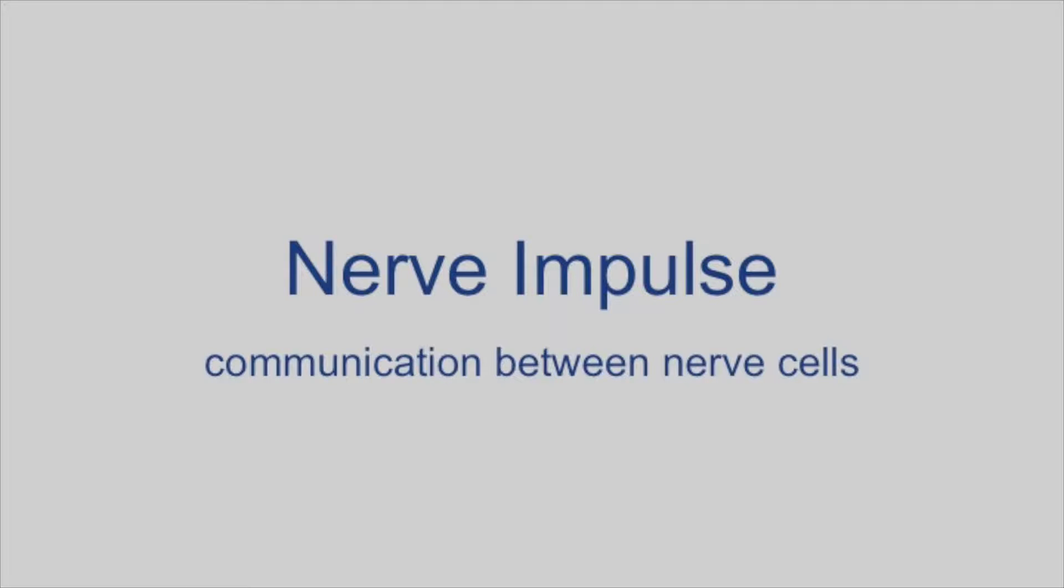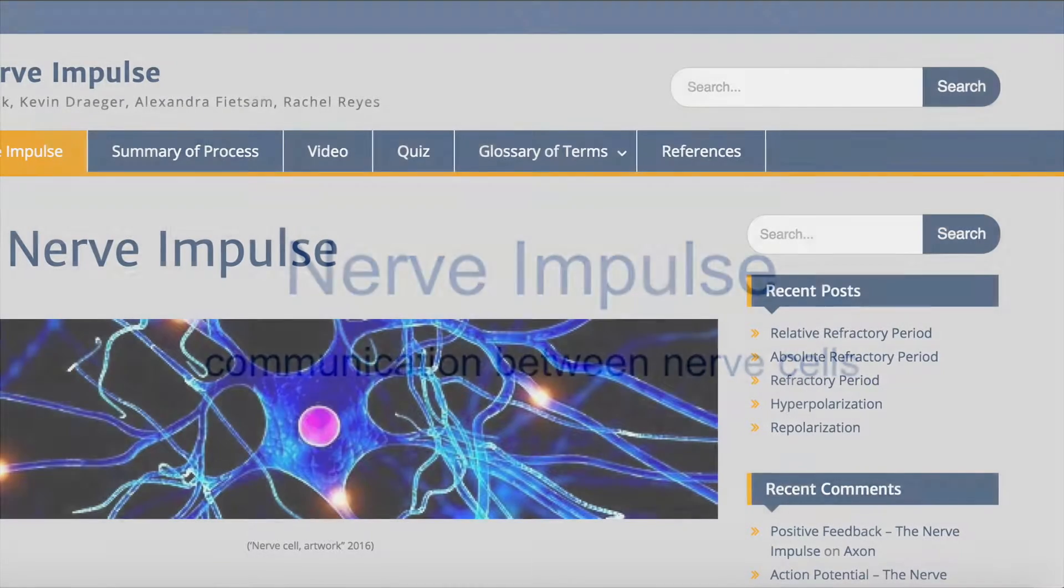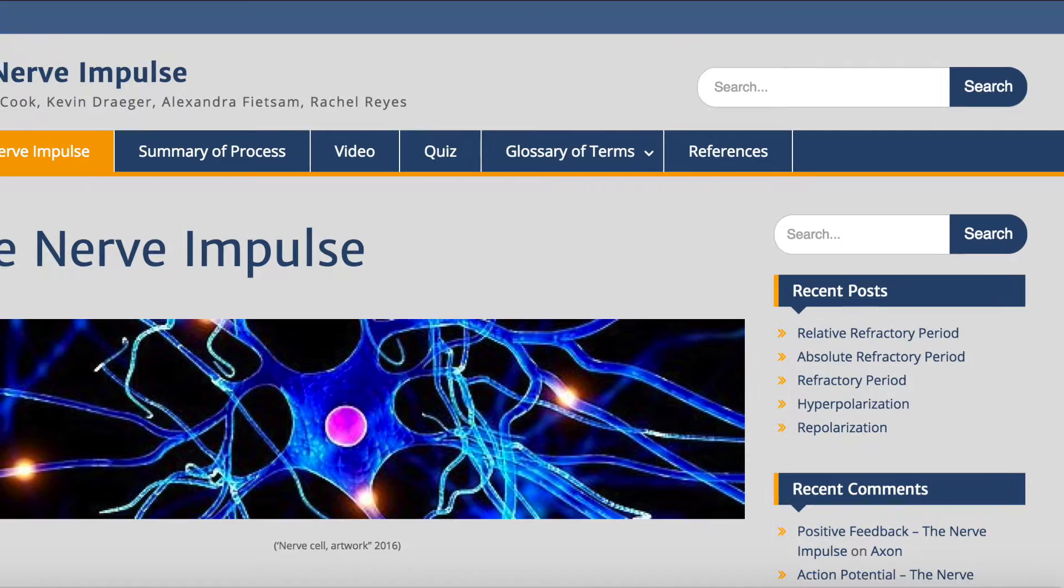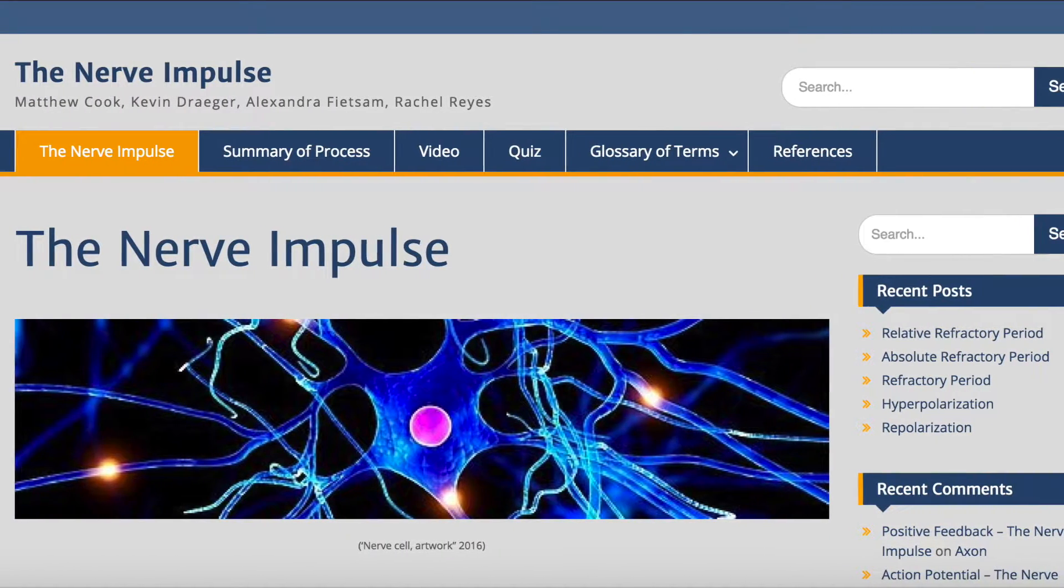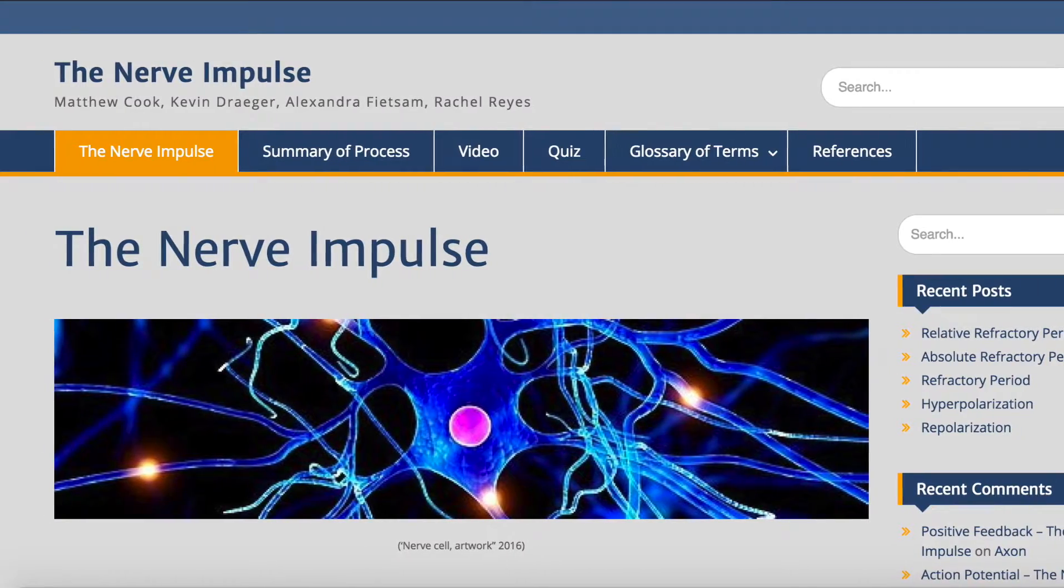This video will walk you through the process of a nerve impulse, which is an electrochemical signal transmitted along a nerve fiber to allow communication between nerve cells. It will be easier to understand this video if you have already looked through the glossary of terms, but you may return to the glossary at any point if you do not understand a term.